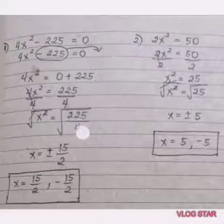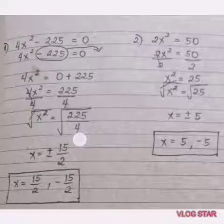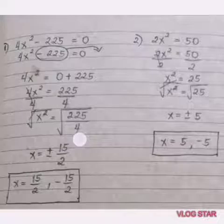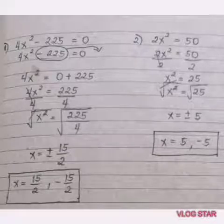We cannot divide 225 over 4 because we cannot get an exact number. That's why we have to get the square root.